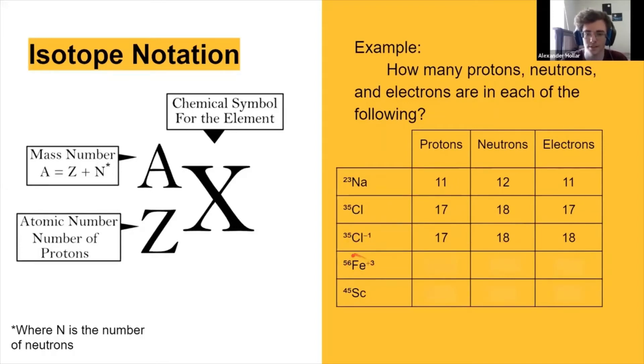All right, so going on, we have our iron. What would be our protons, neutrons, and electrons for that? Trying to get tripped up by that formal charge. So the proton would be 26? Yep.